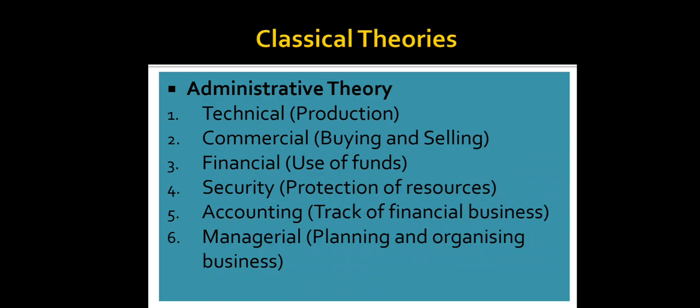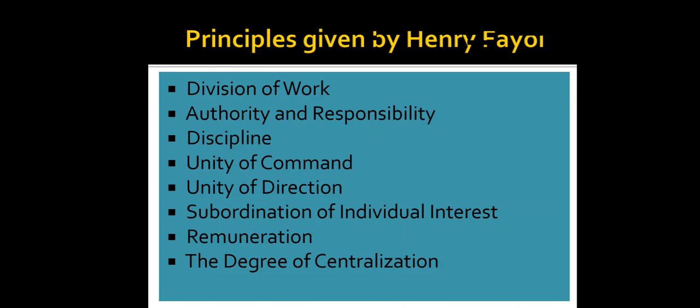Fayol gave us various principles to coordinate internal activities. There were 14 principles in total. The first is division of work: specialization promotes efficiency of the workforce. If work is divided, it increases productivity. The specialization of the workforce increases accuracy, speed, and productivity of the organization. Work must be divided according to the skills of the workers — whoever is skilled for a particular task should be assigned that task only.